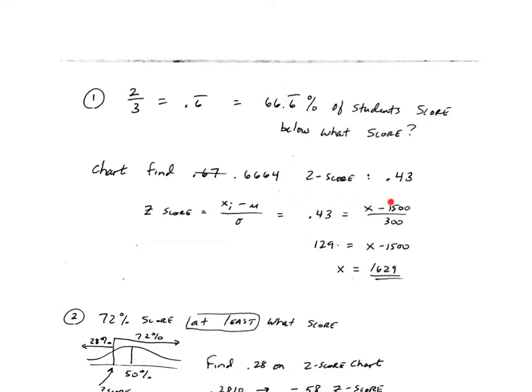So I set it up, you'd multiply each side by 300, you would add 1,500 to both sides, and the score would be 1629. So two out of every three students that take the SAT score less than 1629 on the test.